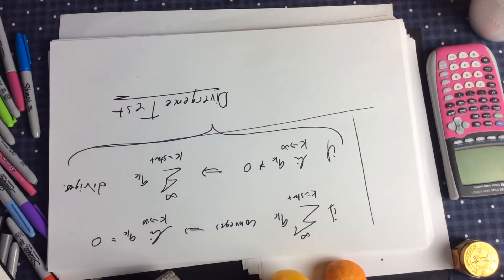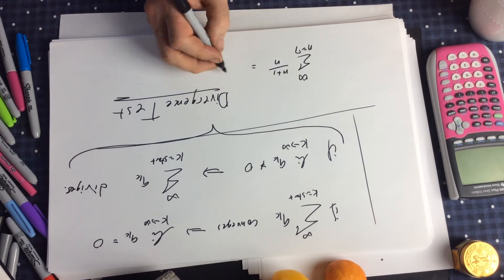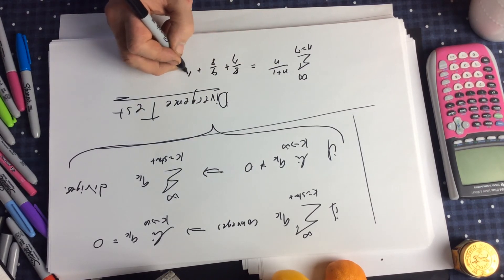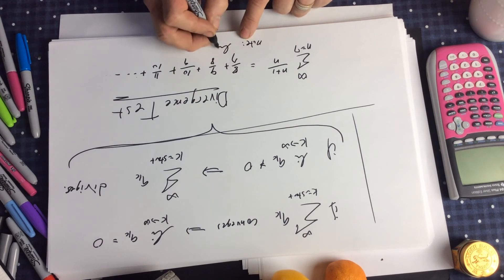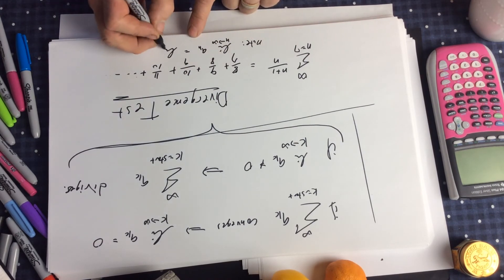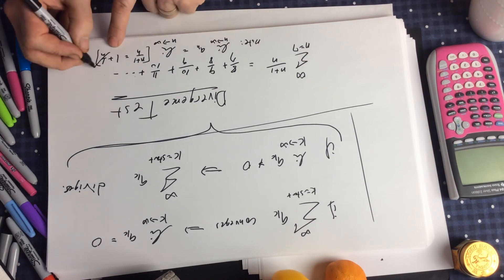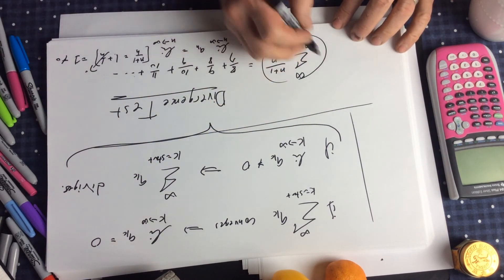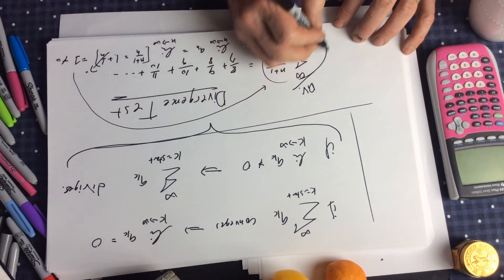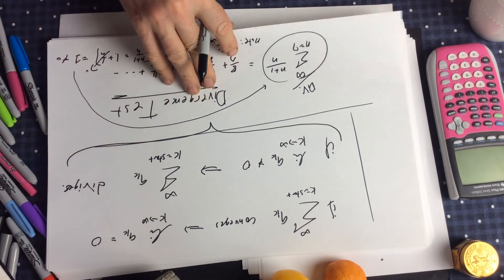Let me show you a divergent series. Let's add up the sum of (n plus 1) over n, from n equals 7 to infinity. Writing out some terms: 8/7, 9/8, 10/9, 11/10. These numbers are getting closer and closer to 1. The limit as n goes to infinity of (n+1)/n equals the limit of 1 plus 1/n, which goes to 1. That number is not small, so this series diverges. Nobody should bother adding up an infinite series like this.